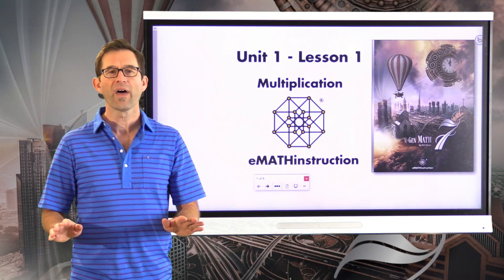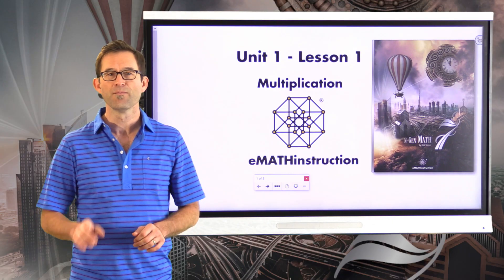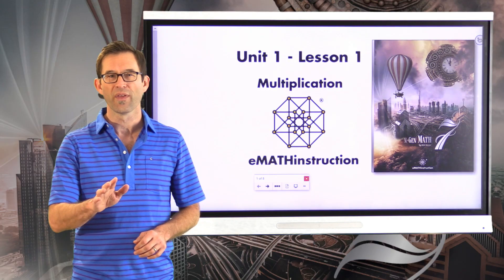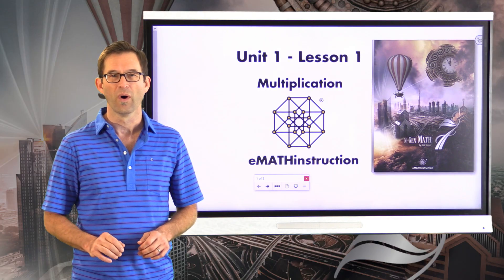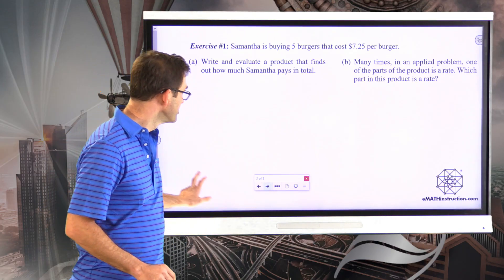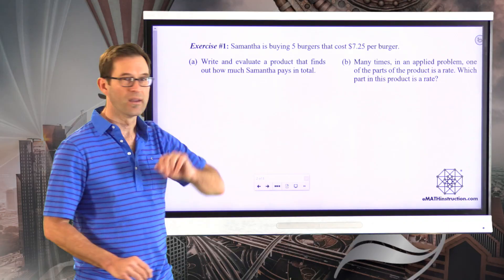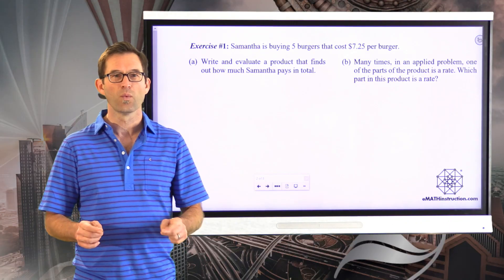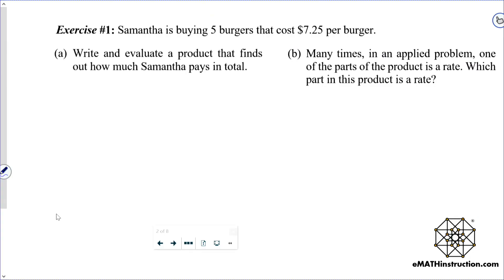Let's start right away with exercise number one. Samantha is buying five burgers that cost $7.25 per burger. Letter A asks us to write and evaluate a product that finds out how much Samantha pays in total.